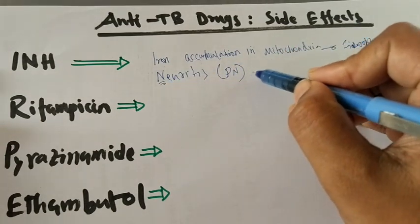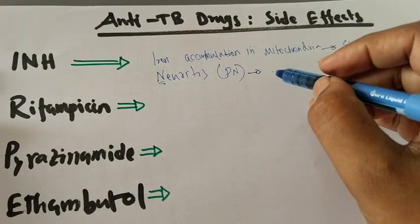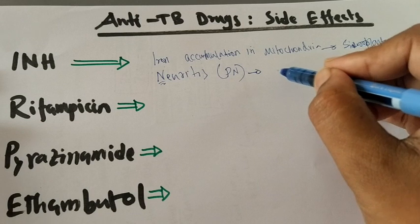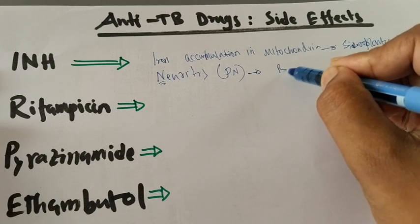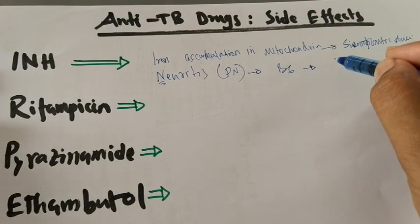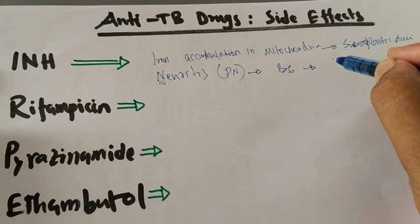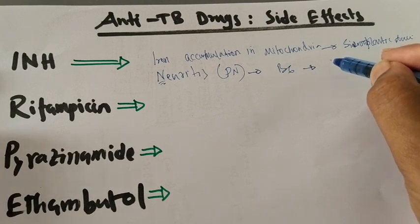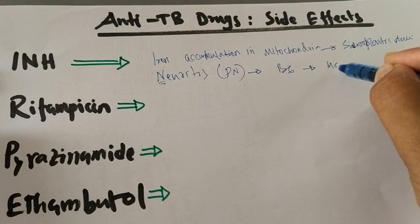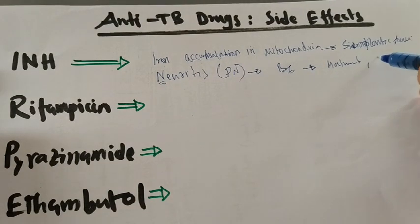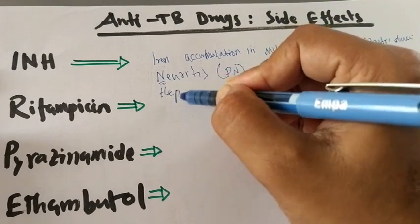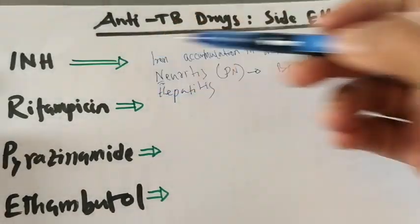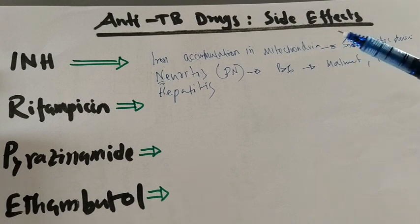For the prevention of INH-induced peripheral neuropathy, we should give the patient prophylactic Vitamin B6, that is pyridoxine. We give pyridoxine for all patients, but it must be given especially to those patients with severe malnutrition and pregnant women. H in INH stands for hepatitis.